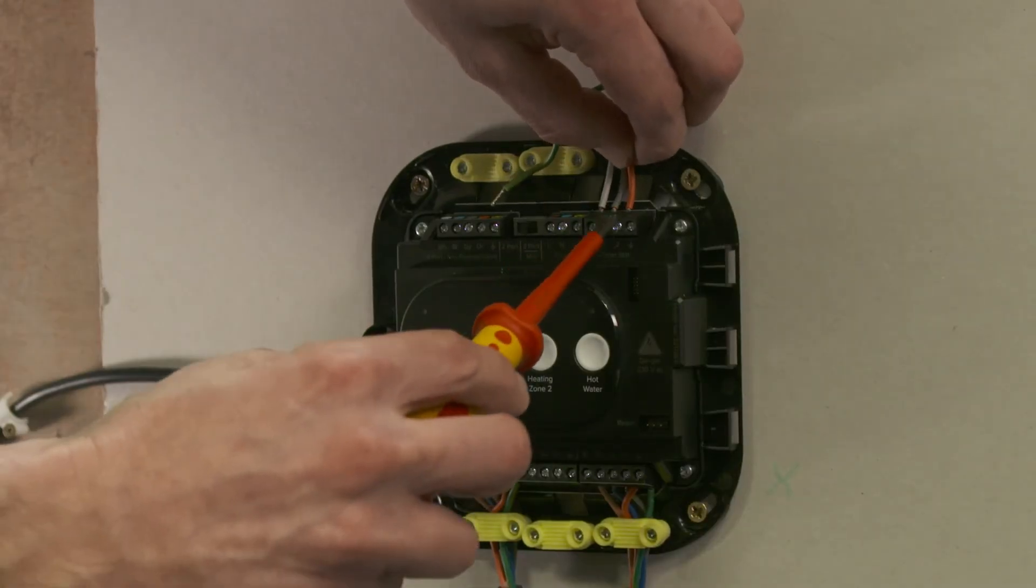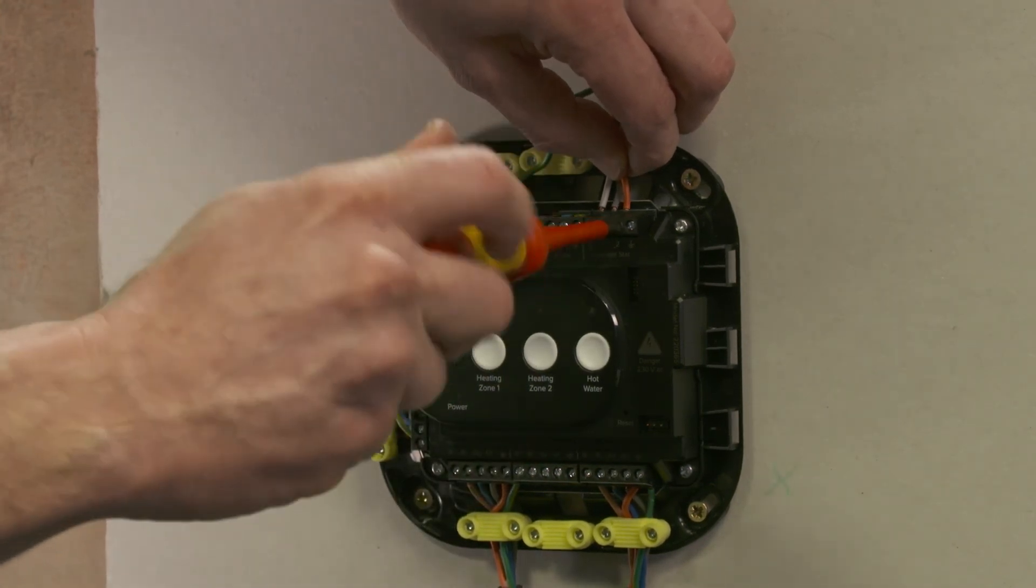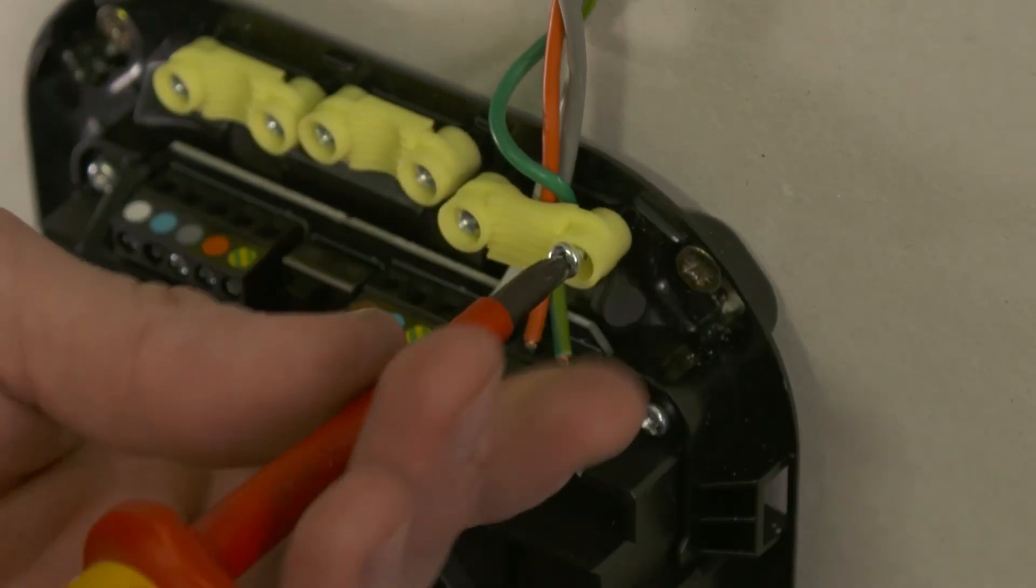Wire in the common and wand connections from the cylinder thermostat, ensuring the wiring is correctly secured.